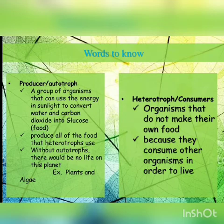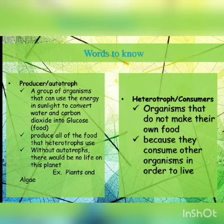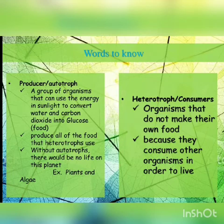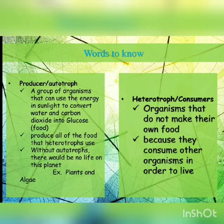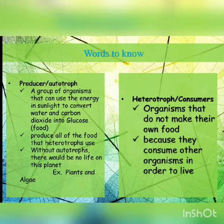Producers produce all of the food that heterotrophs use. Without autotrophs — that is, producers, which are plants — there would be no life on this earth. Examples of producers include plants and algae.